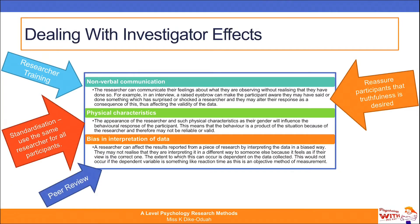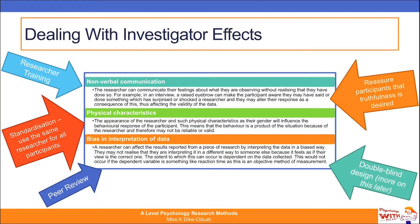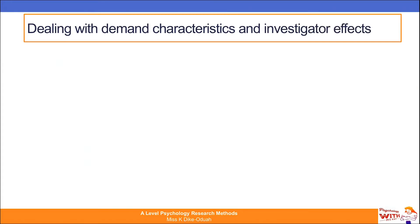Peer review addresses the issue of bias in how researchers interpret their findings. It's important to get a second expert opinion from someone knowledgeable in the field. We'll look at peer review later in research methods, but it's a very good way to ensure that whatever is published as a contribution to scientific knowledge has been reviewed by a significant person in the field who can validate the results and findings. Lastly, it's important that we use a double blind method, which we'll discuss shortly.